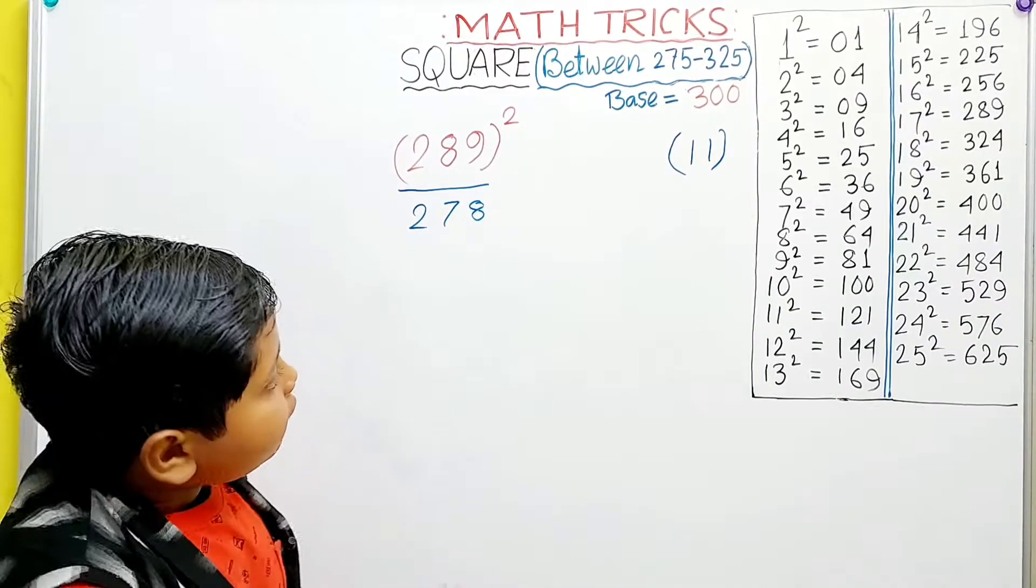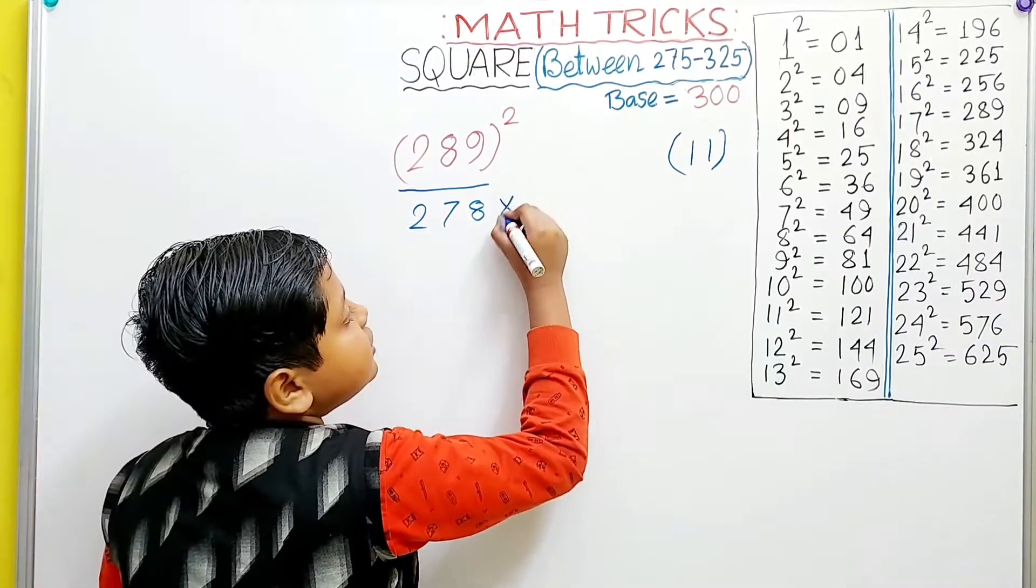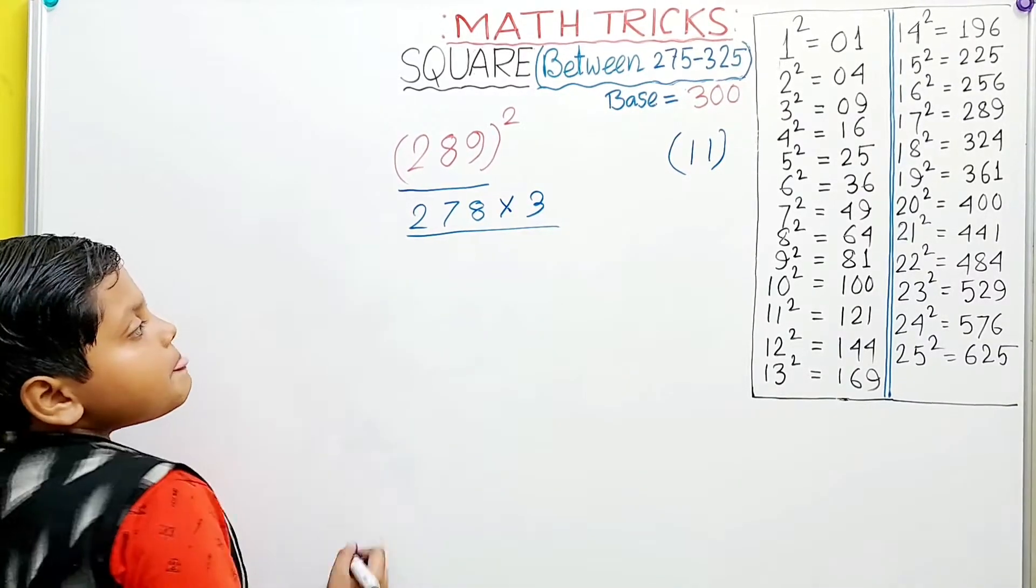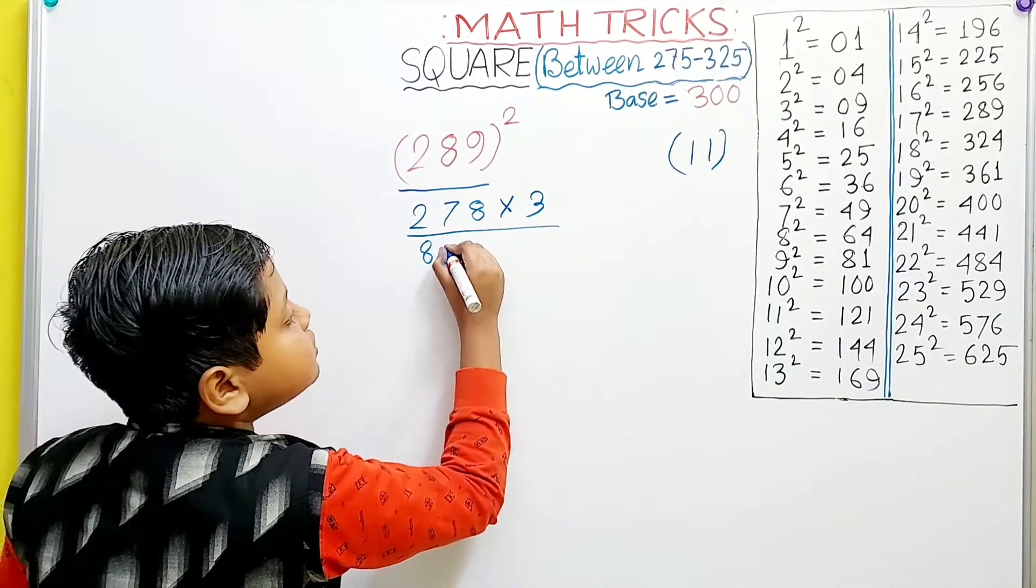Then we have to multiply this with 3. Now it becomes 834.